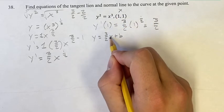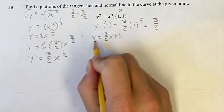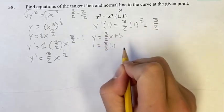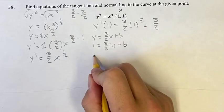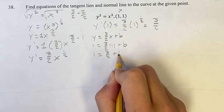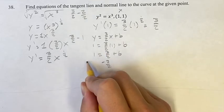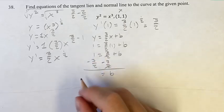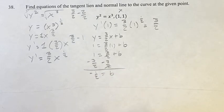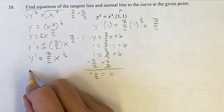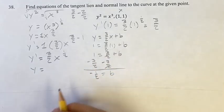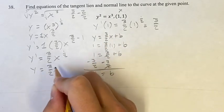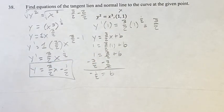Now we have x and y, so we can plug those in and solve for b. We get one equals three-halves times one, plugging in one for x and y, plus b. One equals three-halves plus b. Subtracting three-halves on both sides, these cancel, and we get b equals one minus three-halves, which is negative one-half. So our equation of the tangent line is y equals three-halves x minus one-half. That's our final form.